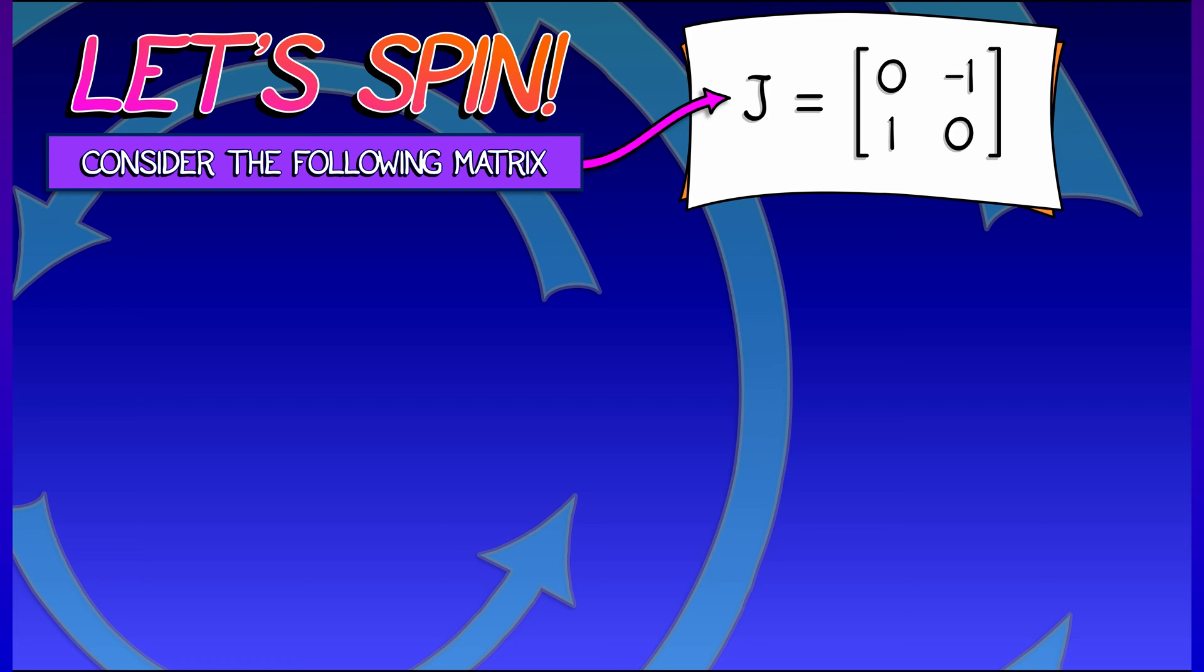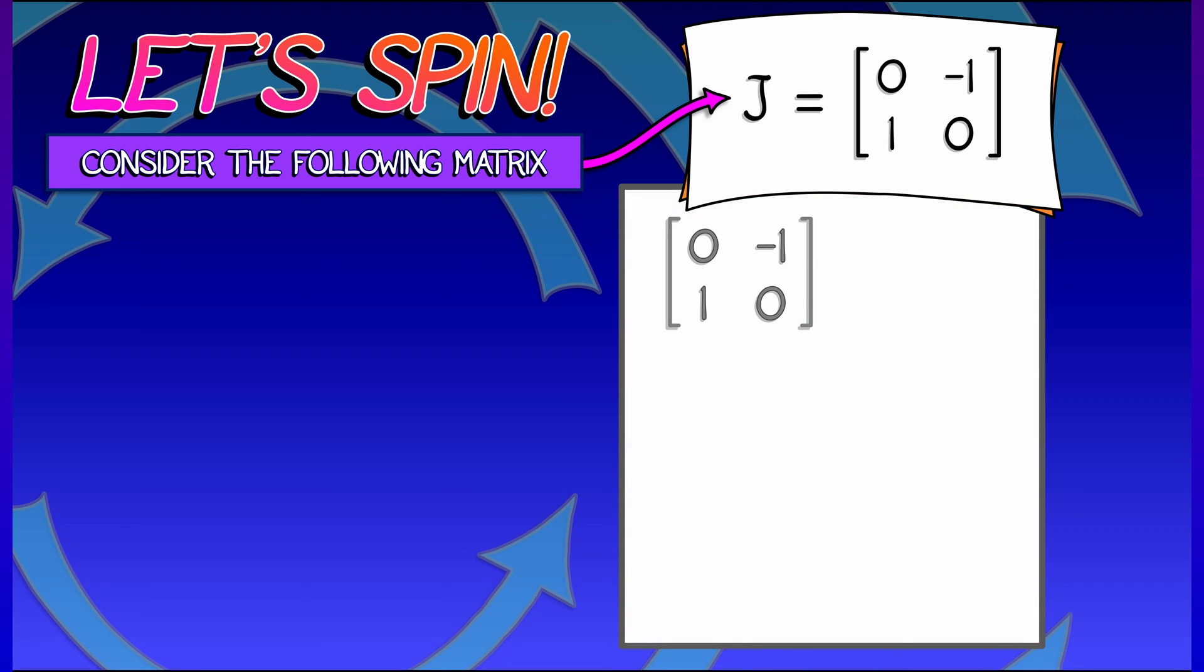with entries 0, negative 1, 1, 0. Now what's special about J is revealed under matrix multiplication. If I take another copy of J and multiply them together, I'm going to get a 2x2 matrix.